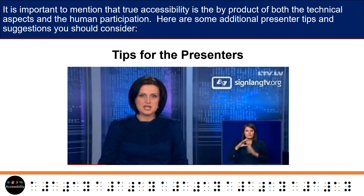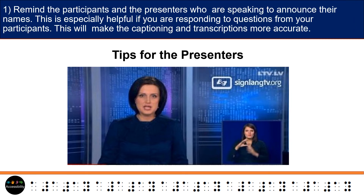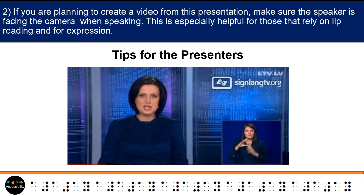It is important to mention that true accessibility is the byproduct of both the technical aspects and the human participation. Here are some additional presenter tips and suggestions you should consider: 1. Remind the participants and the presenters who are speaking to announce their names. This is especially helpful if you are responding to questions from your participants. This will make the captioning and transcriptions more accurate. 2. If you are planning to create a video from this presentation, make sure the speaker is facing the camera when speaking.